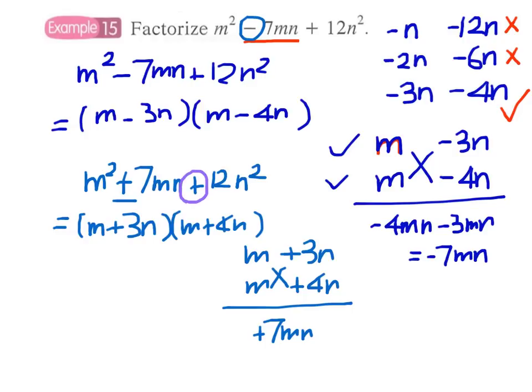We can go a little further: what if we change the sign of the last term? Can we factorize m squared plus 7mn minus 12n squared? Try to find whether we can find two factors that make up this expression, and if it is not possible, ask yourself why.